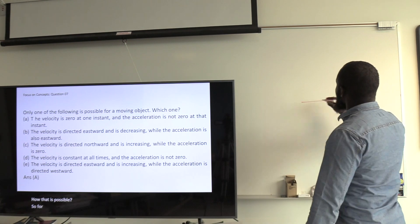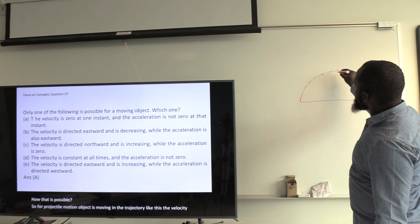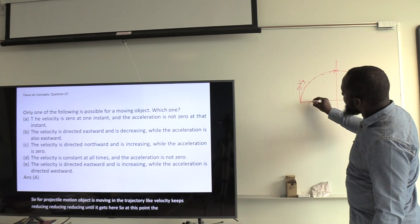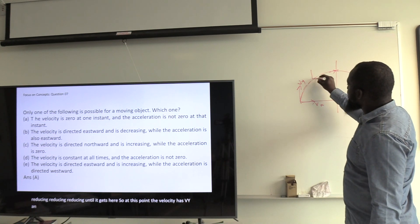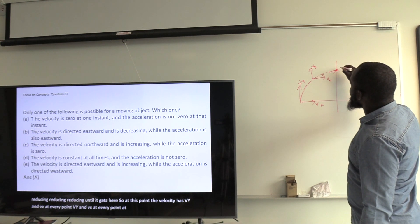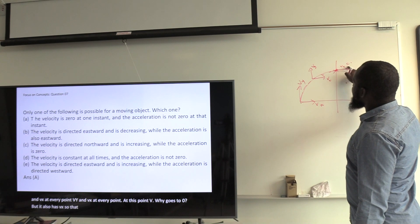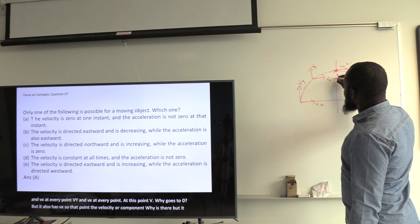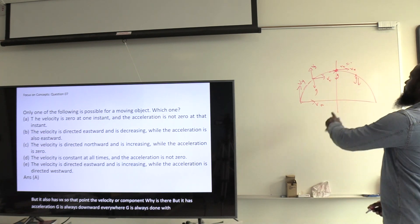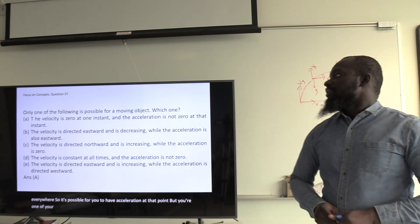For projectile motion, when an object is moving in a trajectory, the velocity keeps reducing until it gets to the top. At every point, the object has Vy and Vx components. At the top, Vy goes to zero but it still has Vx. So the y-component of velocity is zero, but the object still has acceleration — g is always downward everywhere. So it's possible to have acceleration at a point but one velocity component is zero. So A is correct.